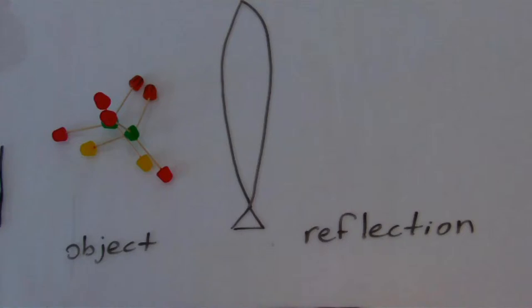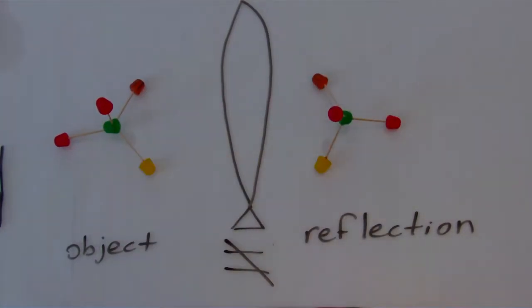Just like with the gloves, the reflection is not superimposable upon its object. This is an example of a chiral molecule.